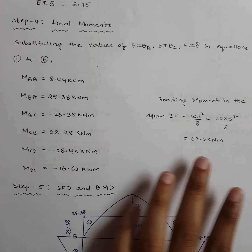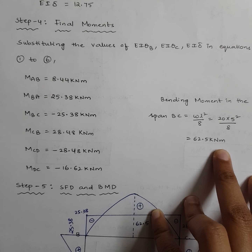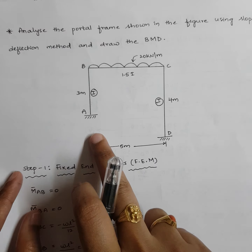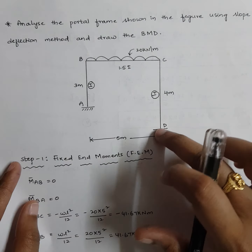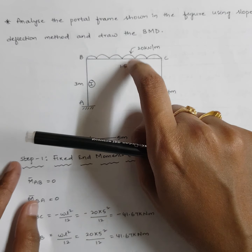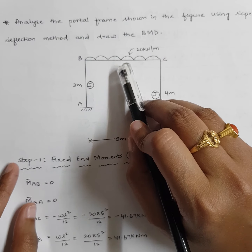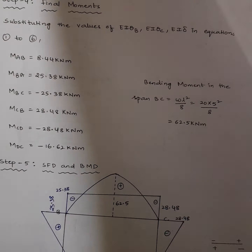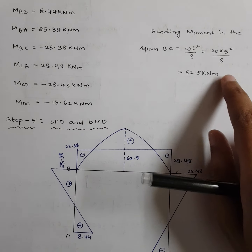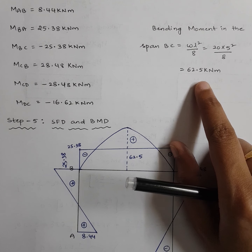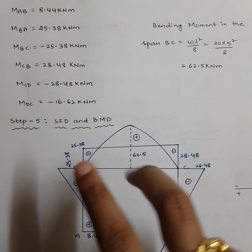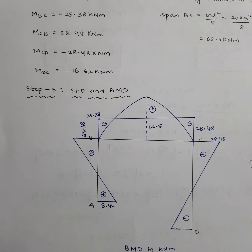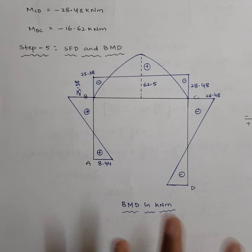To draw the bending moment diagram, we also calculate the bending moment in span BC. Since BC carries a UDL, the BMD will be parabolic, with the height of the parabola equal to WL²/8 = 20×5²/8 = 62.5 kN·m. We now have all values needed to draw the BMD, which is step 5.